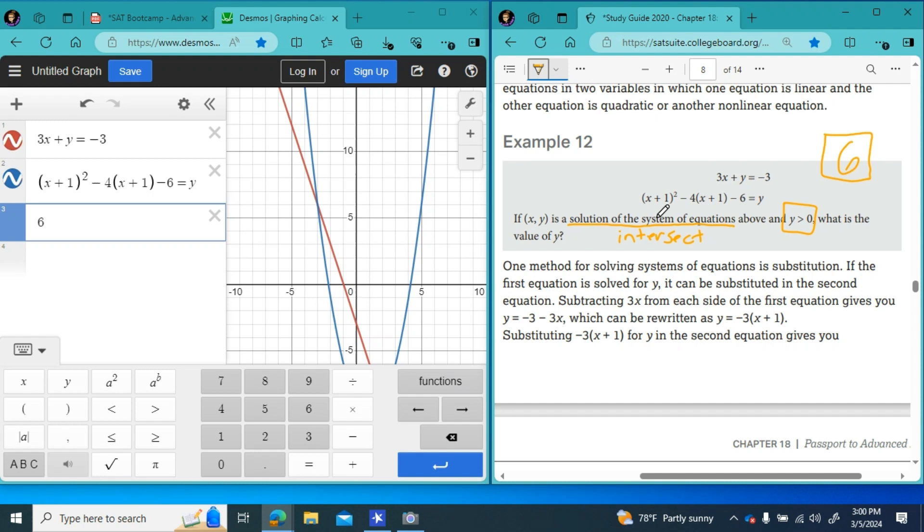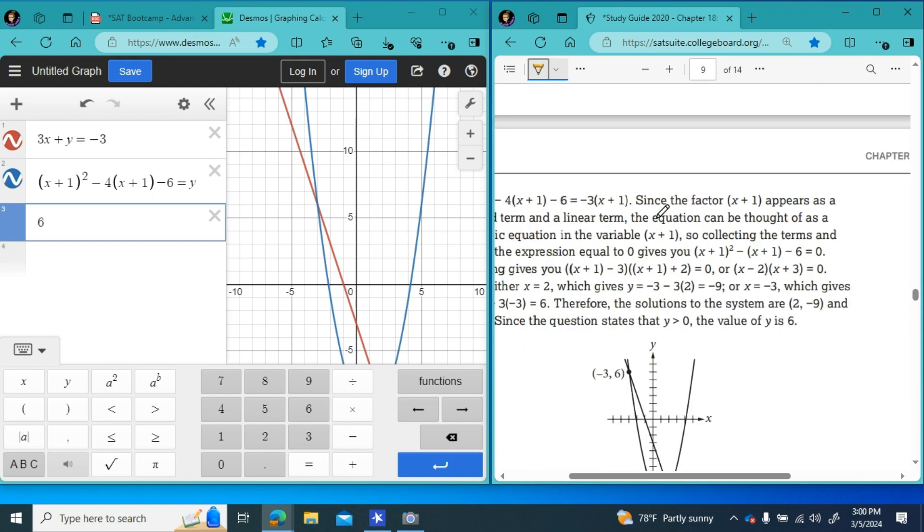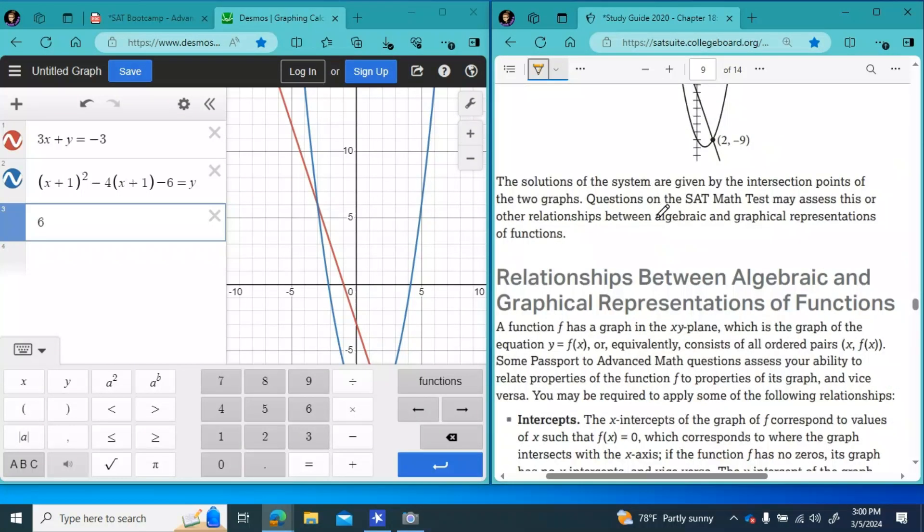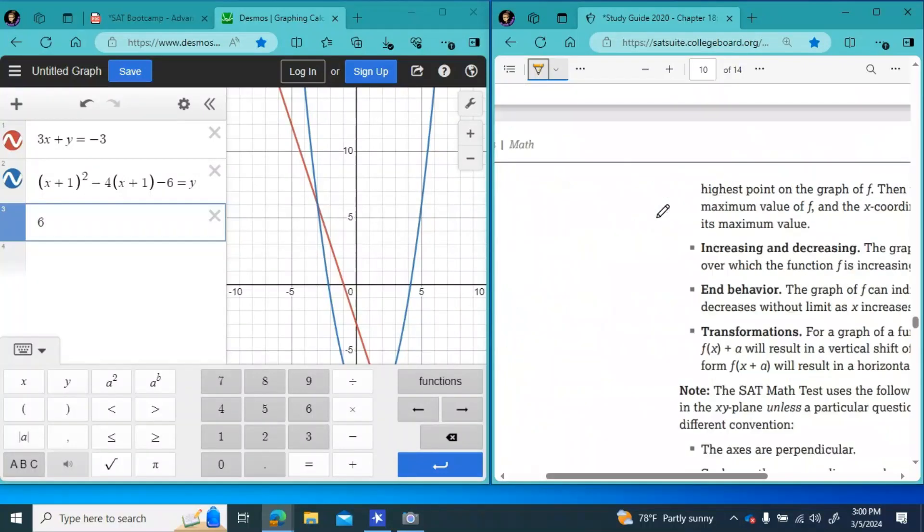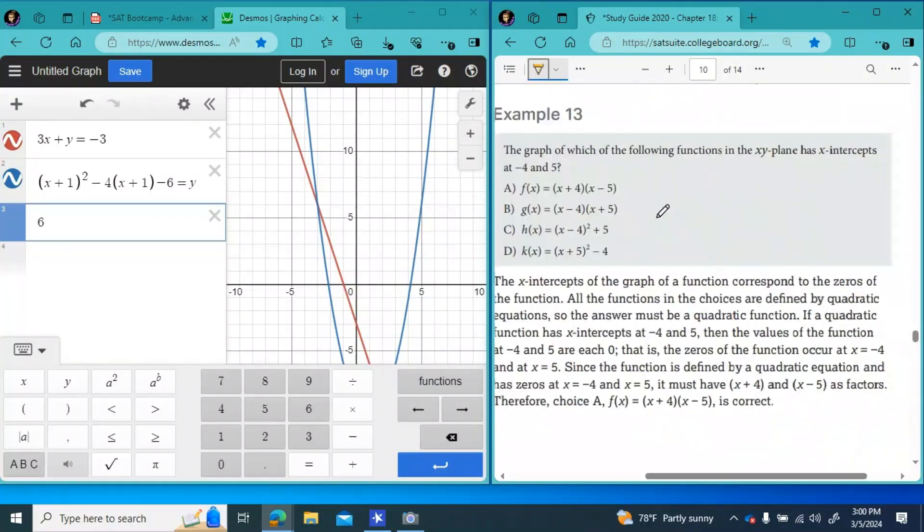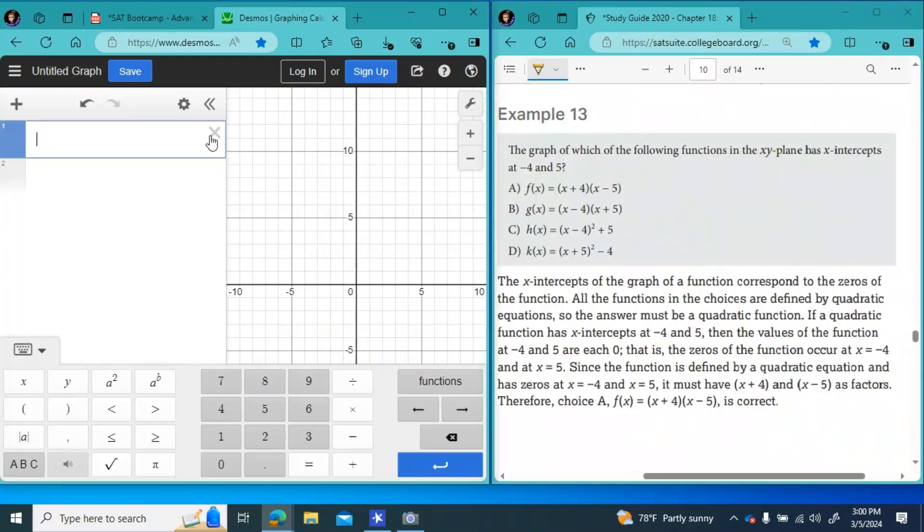And our next topic, after systems of equations, we have the relationships between algebraic and geographical representations of functions. And there's two examples here from SAT, college board. And question number 13 says, the graph of which of the following functions in the xy plane has x intercepts at negative 4 and 5?